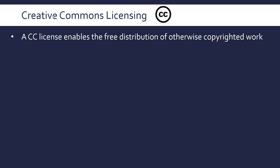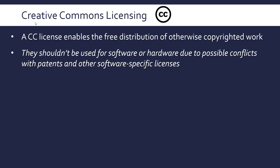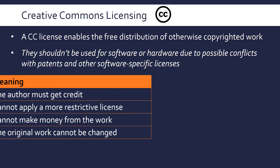Finally, Creative Commons licensing — CC licenses. This isn't a law, but it is relevant to this field. A CC license enables free distribution of otherwise copyrighted work — it's a way of an author giving permission to people to use their work. The Creative Commons organisation says they shouldn't be used for software or hardware due to possible conflicts with patents in individual countries and other software-specific licences. So they're not really used for software or hardware, but they are used for lots of things on the web and lots of resources.